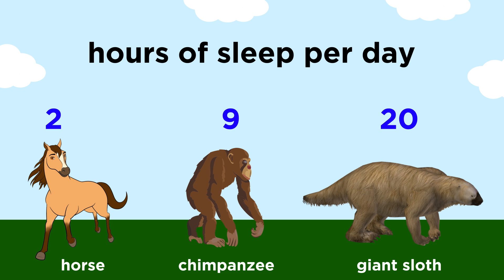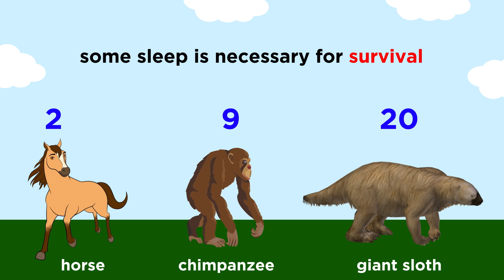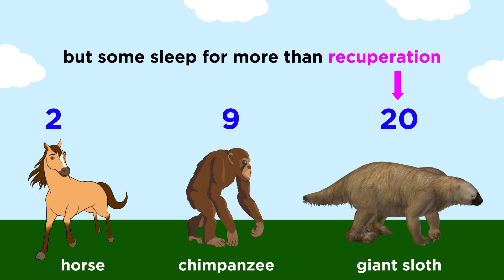In addition, some species sleep as little as two or three hours per day, such as horses, while the giant sloth sometimes sleeps around twenty hours a day. So it would seem that some amount of sleep is necessary for survival, while certain species have evolved to sleep much more for other reasons, as such lengths of time defy the idea that sleep is strictly for recuperating.